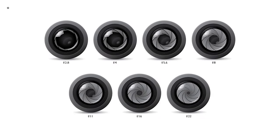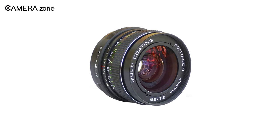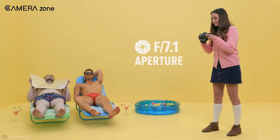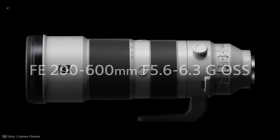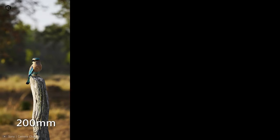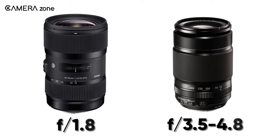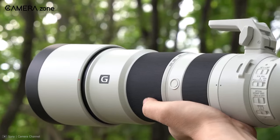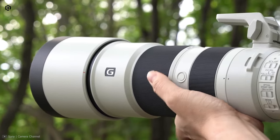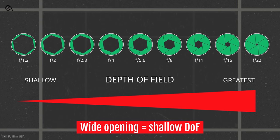Similar to its focal length, prime lenses come with a single aperture. Usually you will get a wider aperture in a prime lens, which allows more light into the sensor and gives you more exposure. On the other hand, zoom lenses come with a range of focal lengths and give you the freedom to zoom in or out within that range. You can find zoom lenses with both variable aperture and constant aperture. If you use a variable aperture zoom lens, the opening of the lens gets narrower as you zoom in, and your exposure is hampered as the amount of light falling on the sensor decreases.